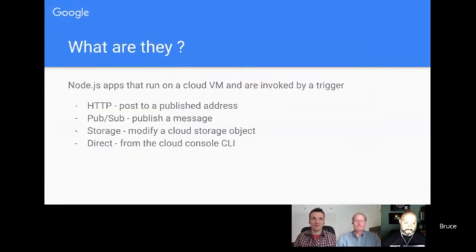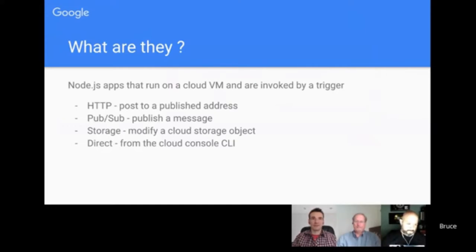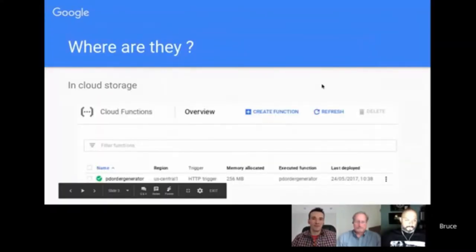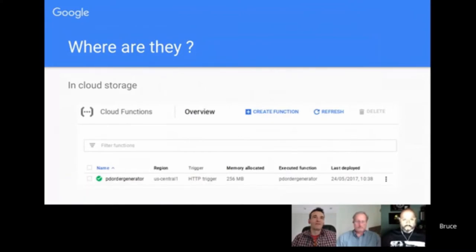Node.js — I'm sure you're all familiar with what that is by now — runs on a cloud virtual machine. We can call it in a number of ways: one is by posting a message to it using HTTP, saying 'go run that function' with some arguments. Another way is by using the Google Pub/Sub or Firebase Pub/Sub, where you publish a message to it. These functions are in the cloud, and in your Google Cloud Console there's a special section for cloud functions.